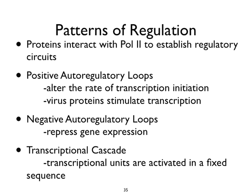These proteins all interact with Polymerase II, and their purpose is to establish a regulatory circuit — both positive autoregulatory loops that alter the rate of transcriptional initiation, and negative autoregulatory loops that repress gene expression. But the most important thing they do is initiate transcriptional cascades. For almost all viruses studied, transcriptional units are activated in a fixed sequence: one family of genes turned on, a second turned on later, and a third after DNA replication.